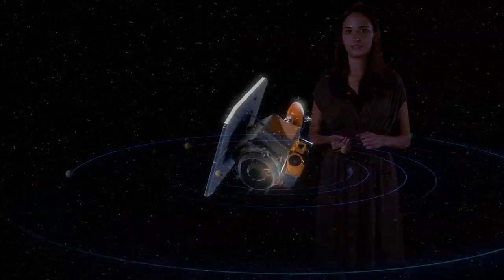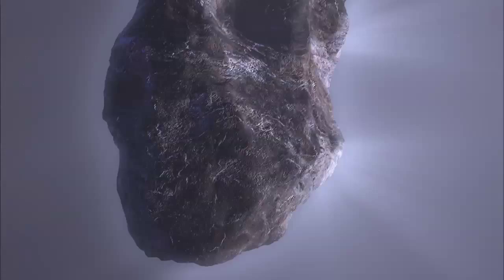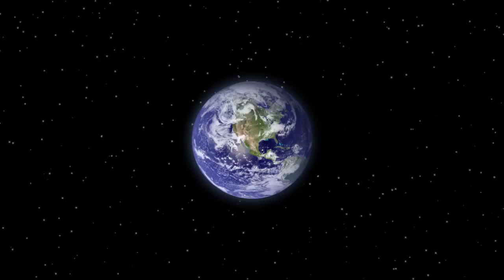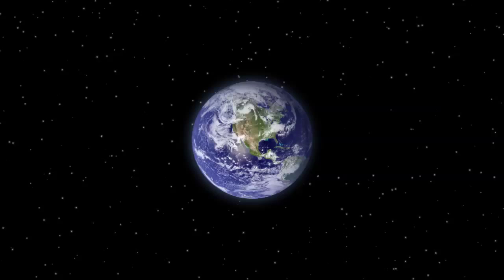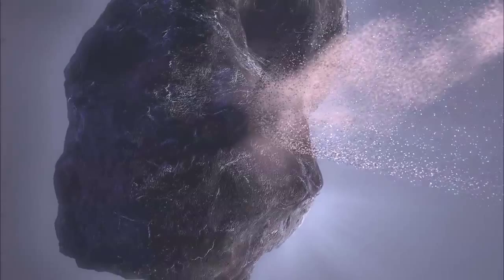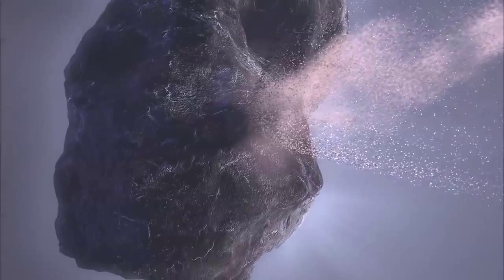Well it turns out they can. Remember the Deep Impact mission, the NASA spacecraft that slammed a probe into a comet in 2005? Well now it's headed for another comet. While on its way we used its instruments to study the amount of red, green and blue light reflected by Earth, the Moon and Mars.